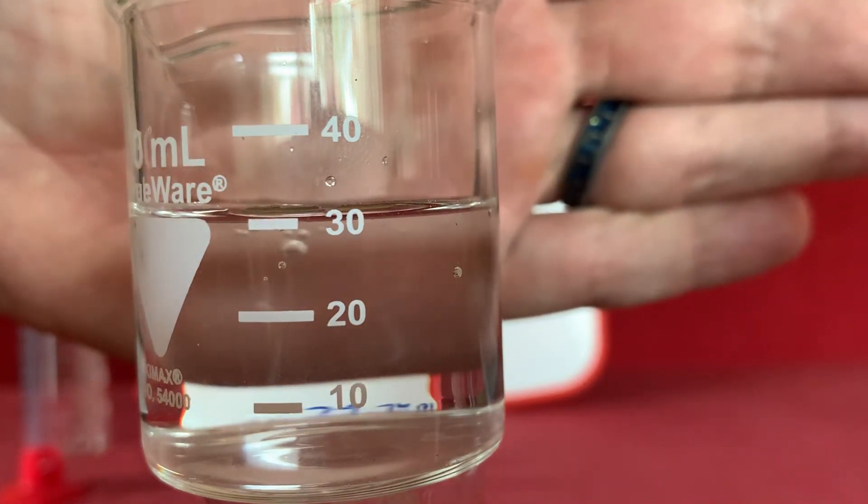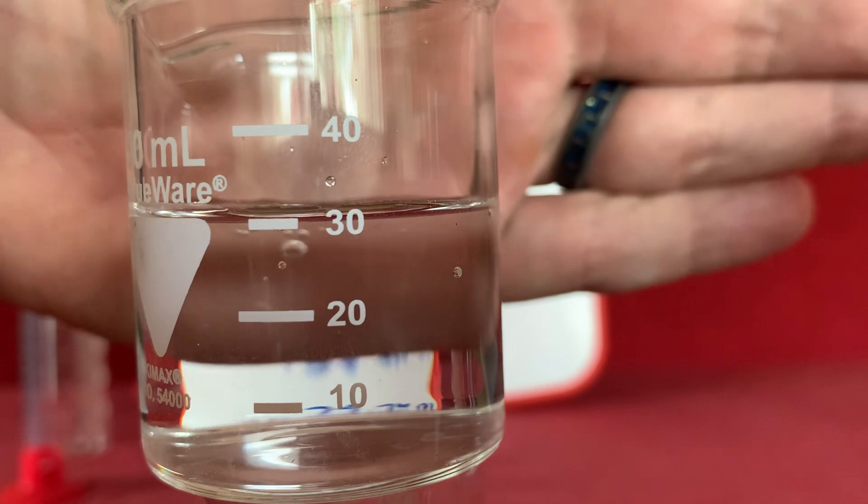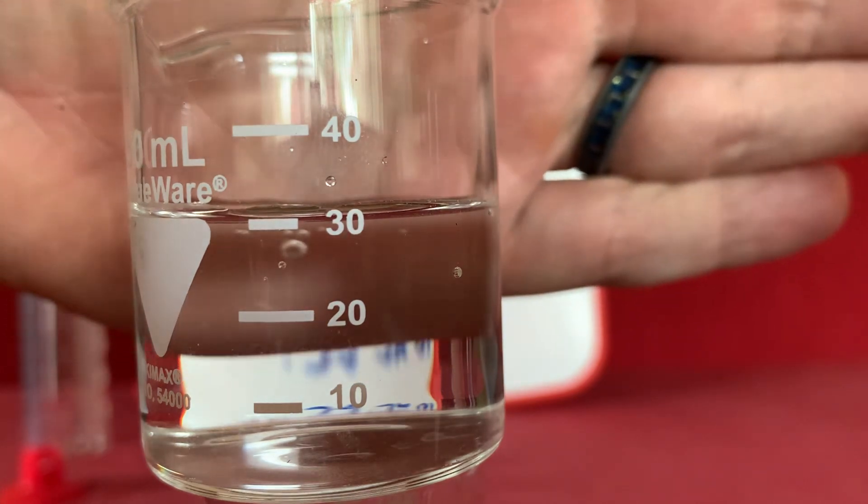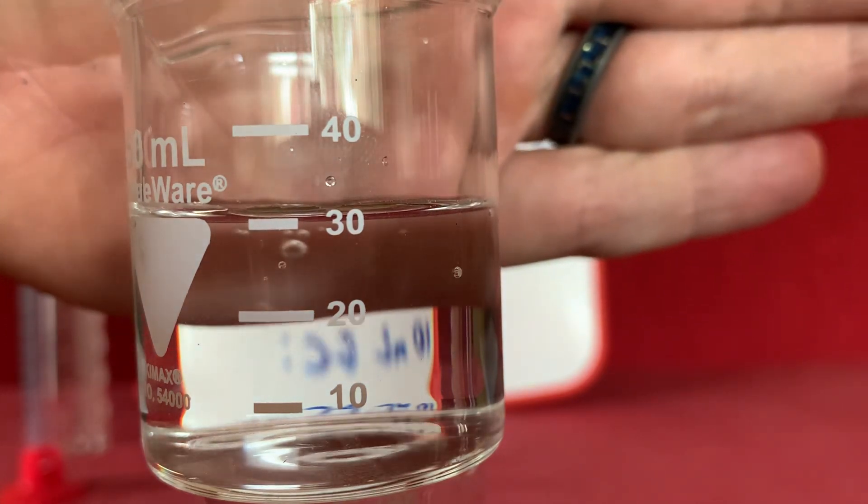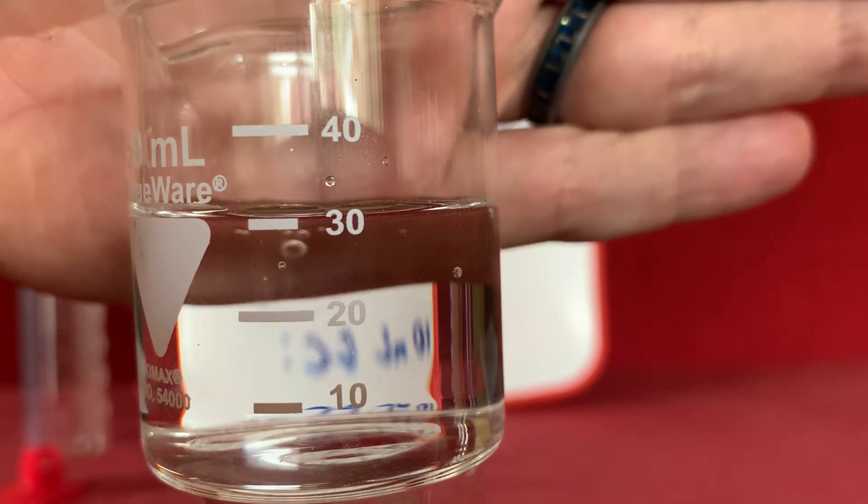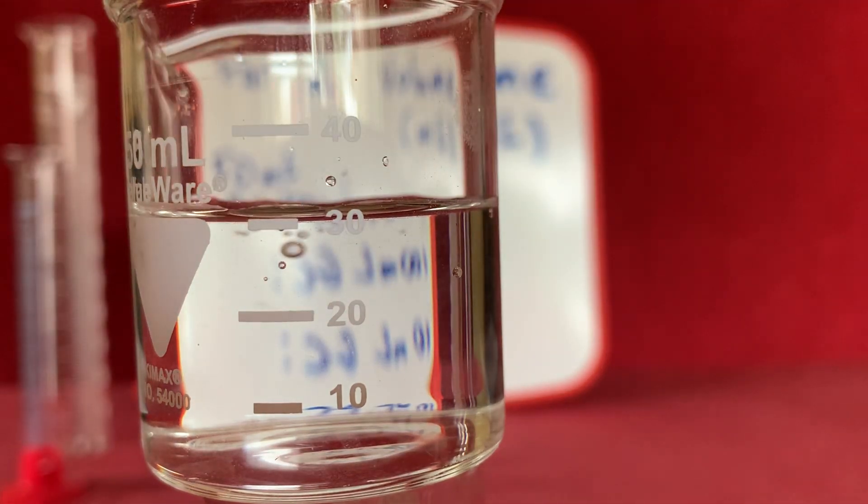As this is graduated to tens of milliliters we would estimate to the ones of milliliters. Since this is very close to the line we'll say that this is 30 milliliters or 3.0 times 10 to the first milliliters.